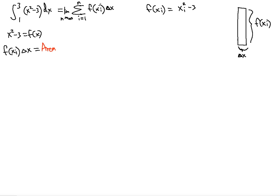In order to use the Riemann sum, we have to have the i's and n's only, because we're dealing with the first i to the nth i. So let's find what Δx is — Δx is going to be found by using n subintervals.